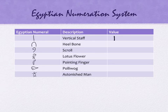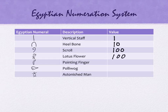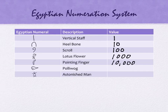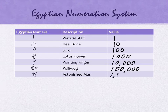The vertical staff has a value of one. The heel bone has a value of ten. The scroll is a value of one hundred. The lotus flower is one thousand. The pointing finger is ten thousand. The polywog is a hundred thousand. And the astonished man — I think he's astonished because he's worth a million.